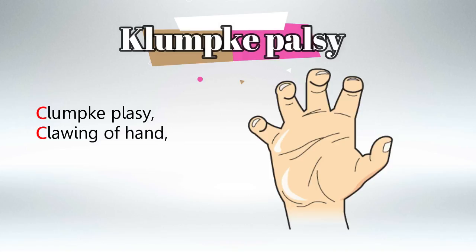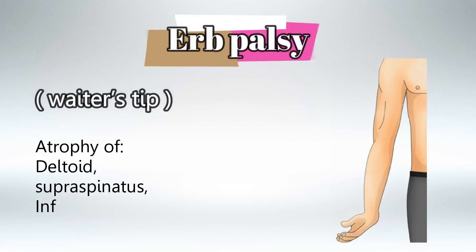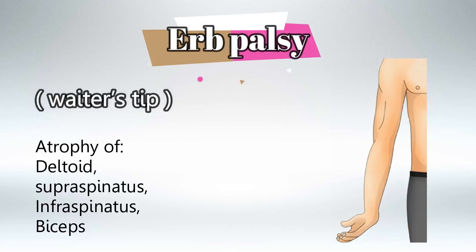Remember that Klumpke Palsy is clawing of the hand and is caused by climbing or grabbing a tree. Erb Palsy presents as waiter's tip and will cause atrophy of the deltoid muscle, the supraspinatus and infraspinatus muscles, and the biceps muscle as well.